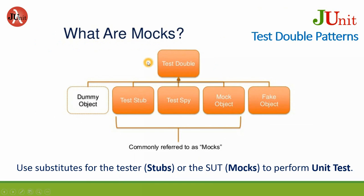The test double patterns can have these different variants: dummy object, test stub, test spy, mock object, and fake object. Test stub, mock, and spy are called the mocks. It is to use substitutes for the system under test to perform unit testing. The tester is sometimes called a stub, and the system under test is called a mock.